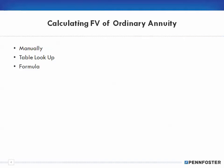Now, calculating the future value of an ordinary annuity — as you recall from the previous chapters on future value calculations of lump sums, there were three ways to calculate it. The same applies to an ordinary annuity: you can do it manually, look it up in a table, or use the formula.